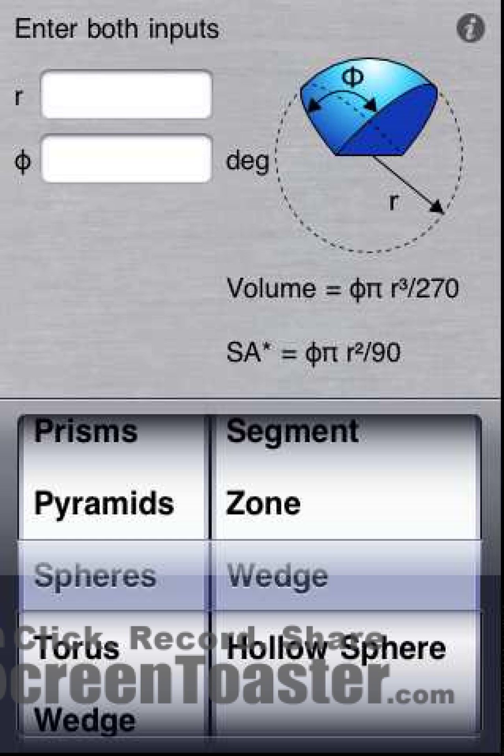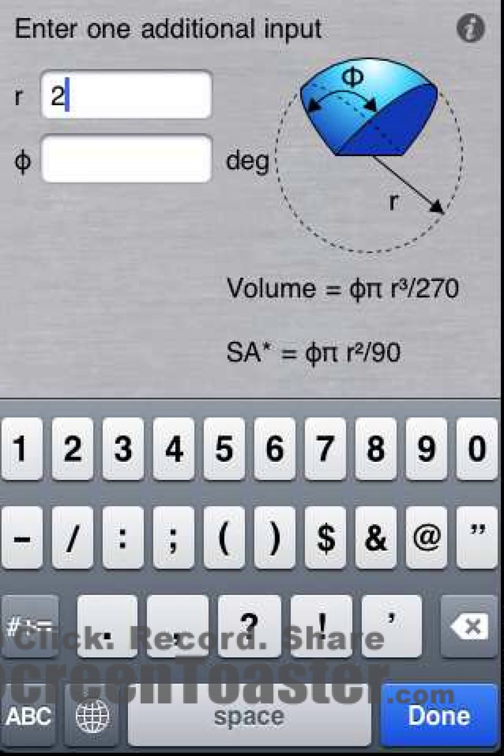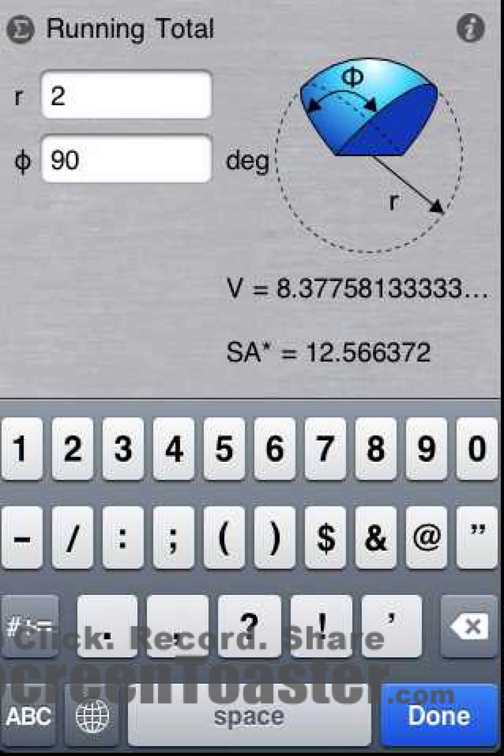As seen by the instructions along the top, we must enter both inputs. We'll enter a radius of 2 and an angle of 90 degrees. Notice that the calculation was performed as soon as we entered the required number of inputs.